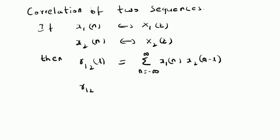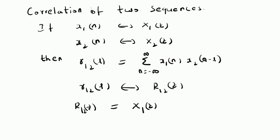Now, the Z-transform of this correlation sequence R12 of L is given by R12 of Z — where small r is replaced by uppercase R. This R12 of Z is given by the product of X1 of Z, the Z-transform of the first sequence, and X2 of Z inverse, the time-reversed version of the Z-transform of the second sequence. That is, X1 of Z multiplied by X2 of Z inverse.